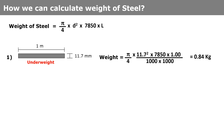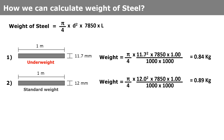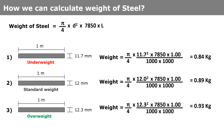First, for a bar having length 1 meter and diameter 11.7 mm, we get a weight of 0.84 kg. Second, for a bar having length 1 meter and diameter 12 mm, which is the standard weight, we get a weight of 0.89 kg. Third, for a bar having length 1 meter and diameter 12.3 mm, we get a weight of 0.93 kg.